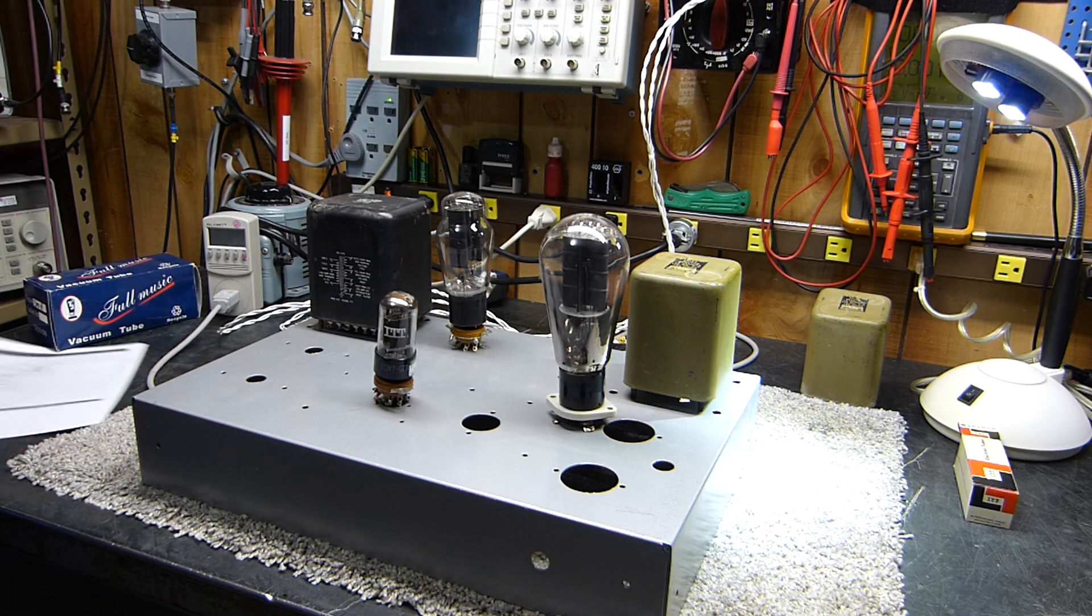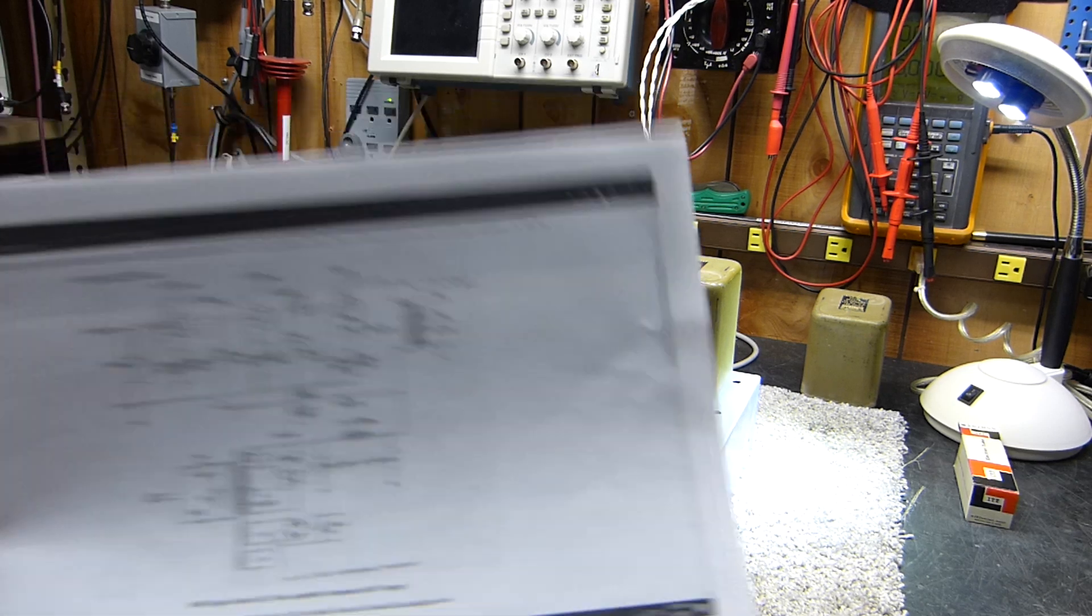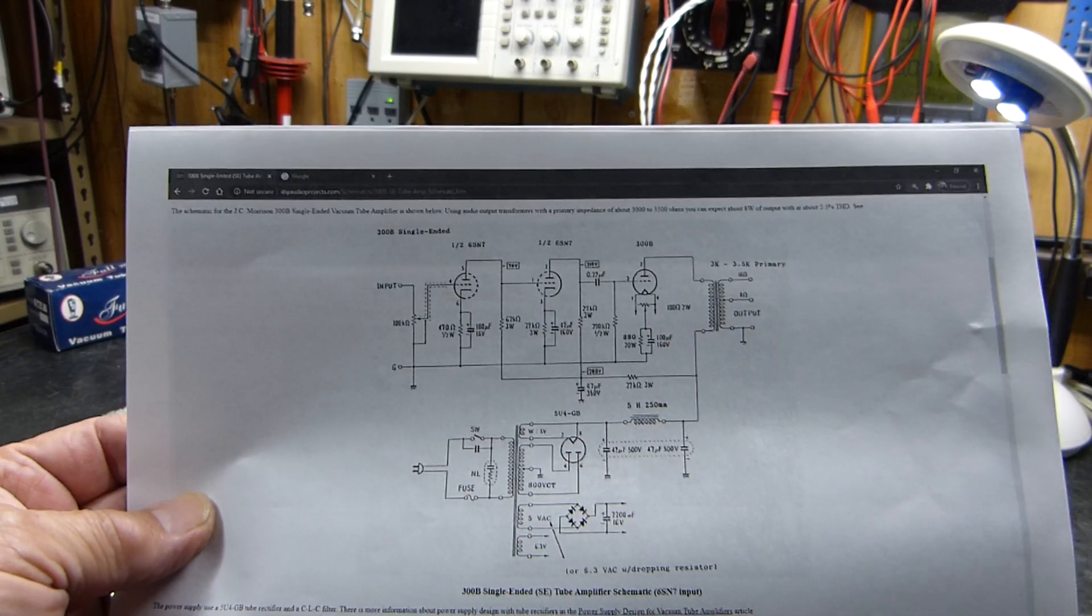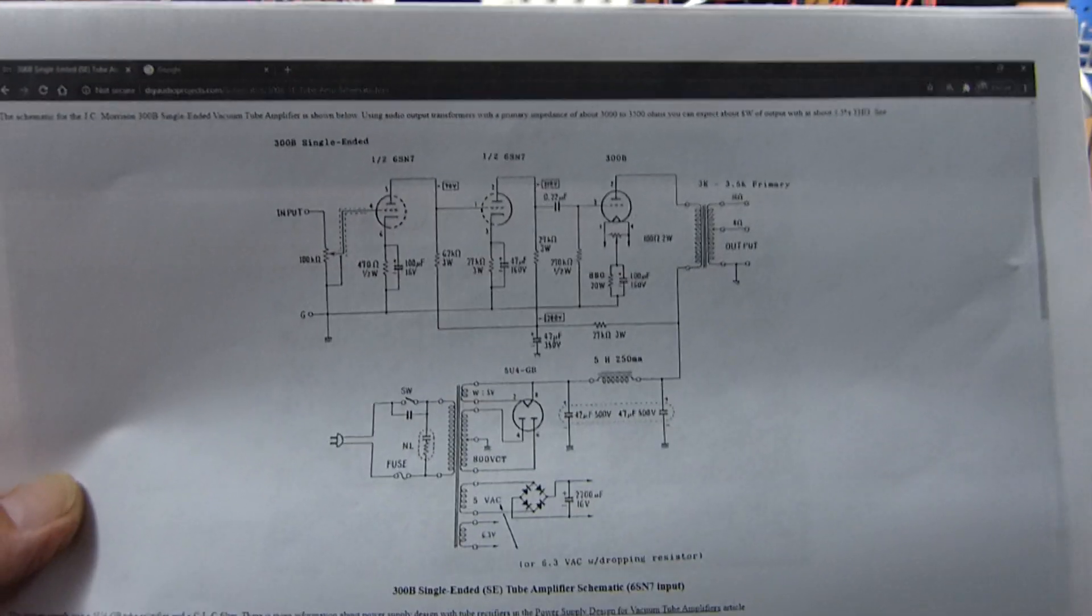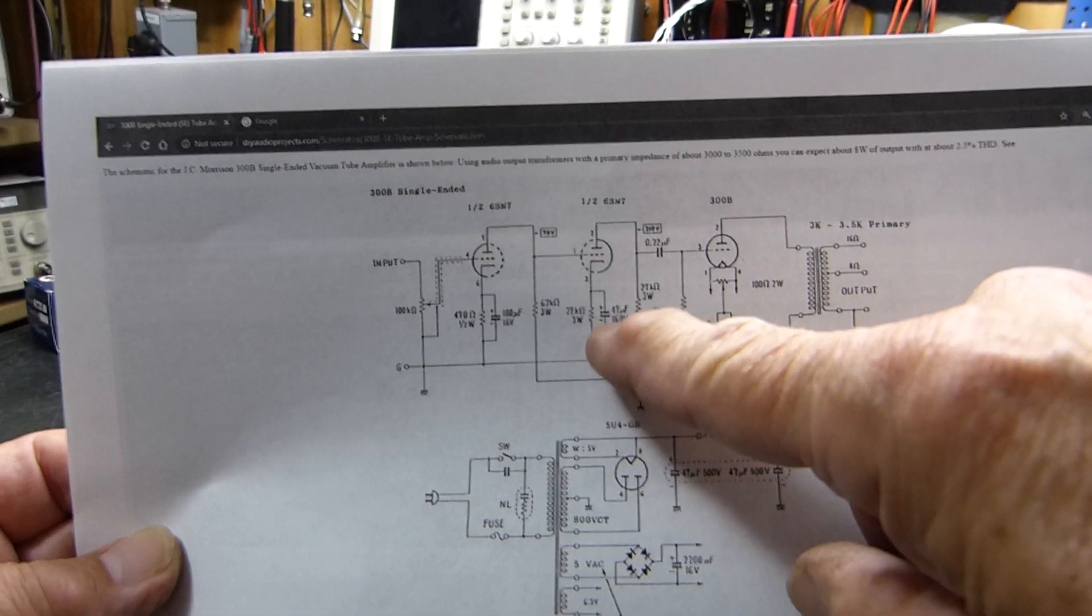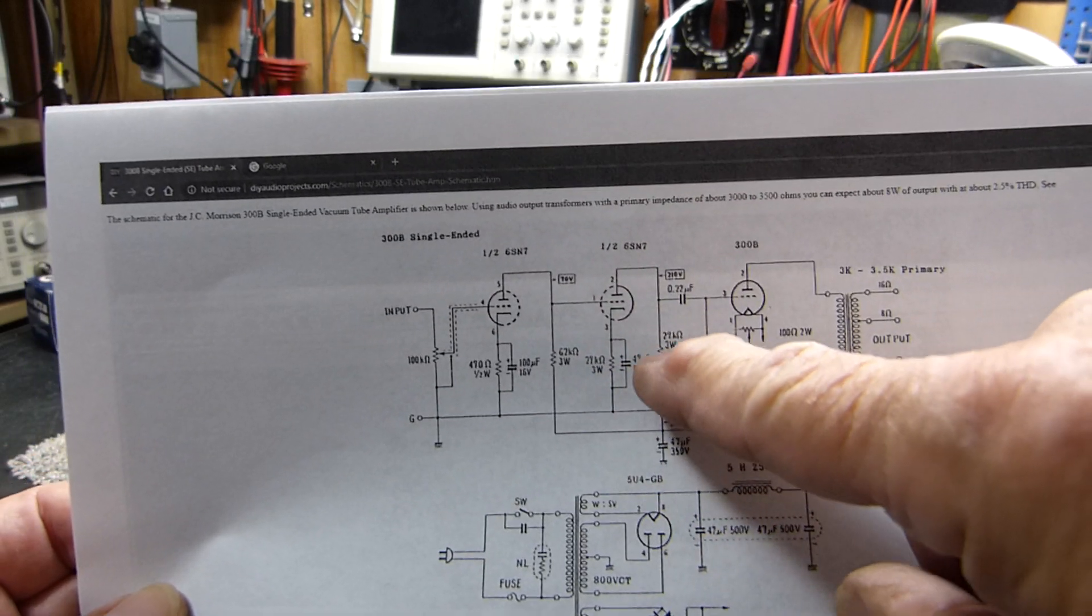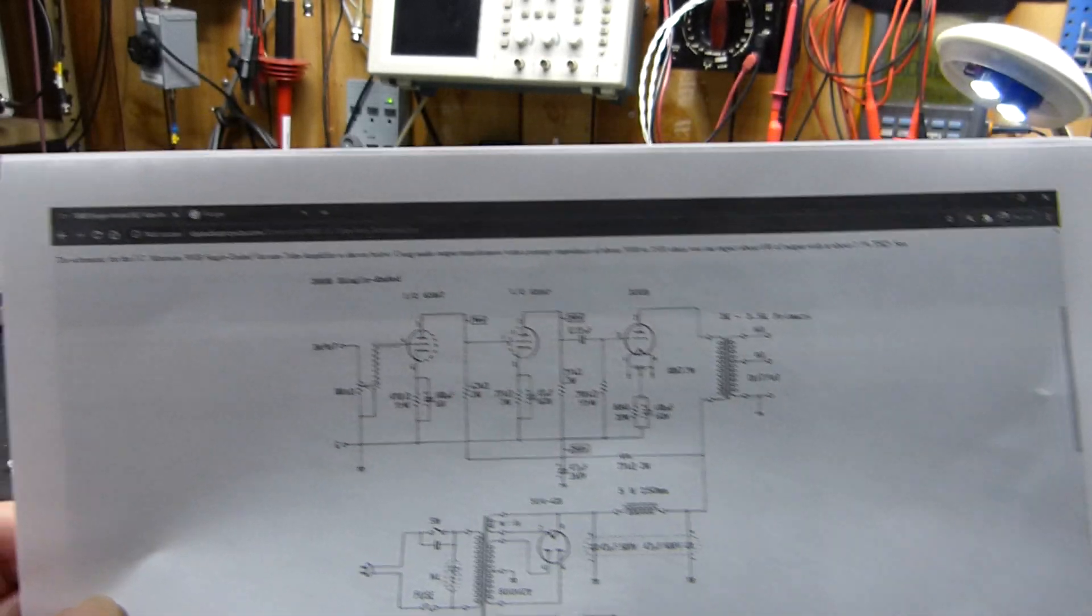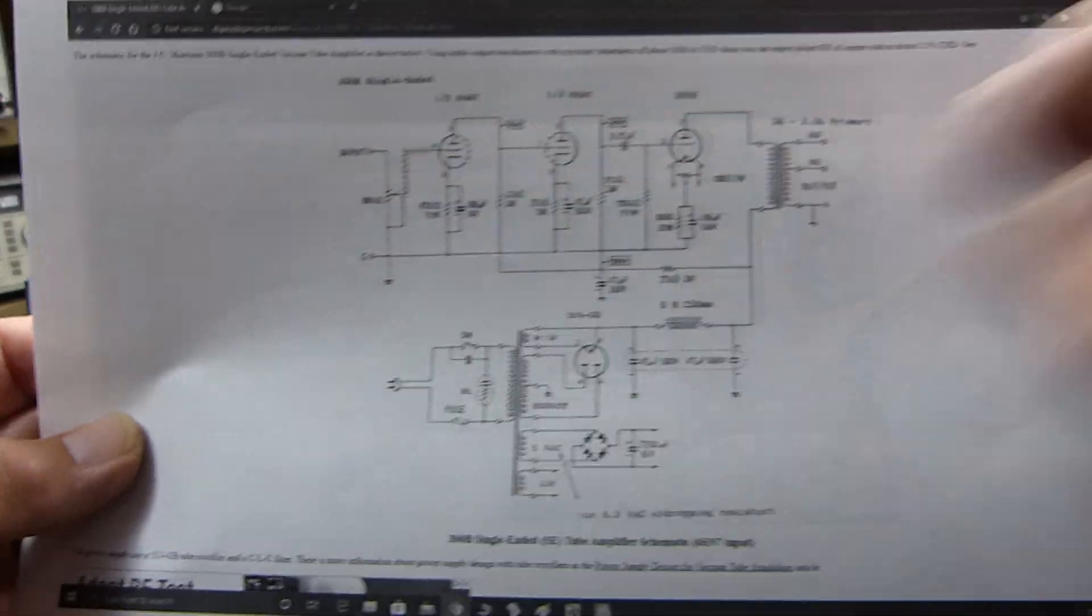I found this schematic on the internet. It's basically a Williamson design, except they don't use the - they've got this resistor down here bypassed. There it is, very simple. I like it. Using the 5U4, etcetera.